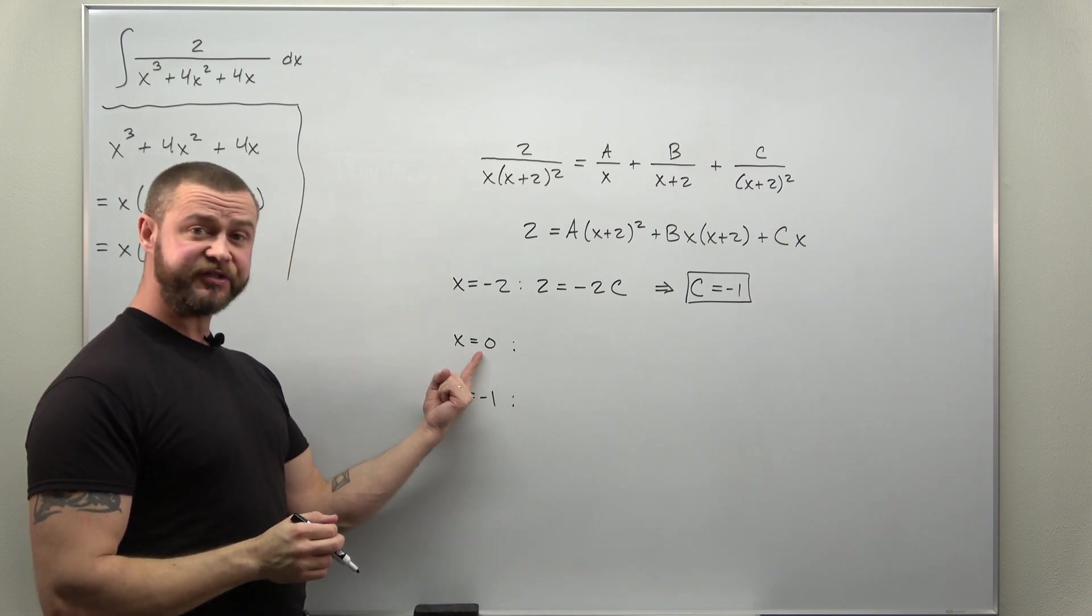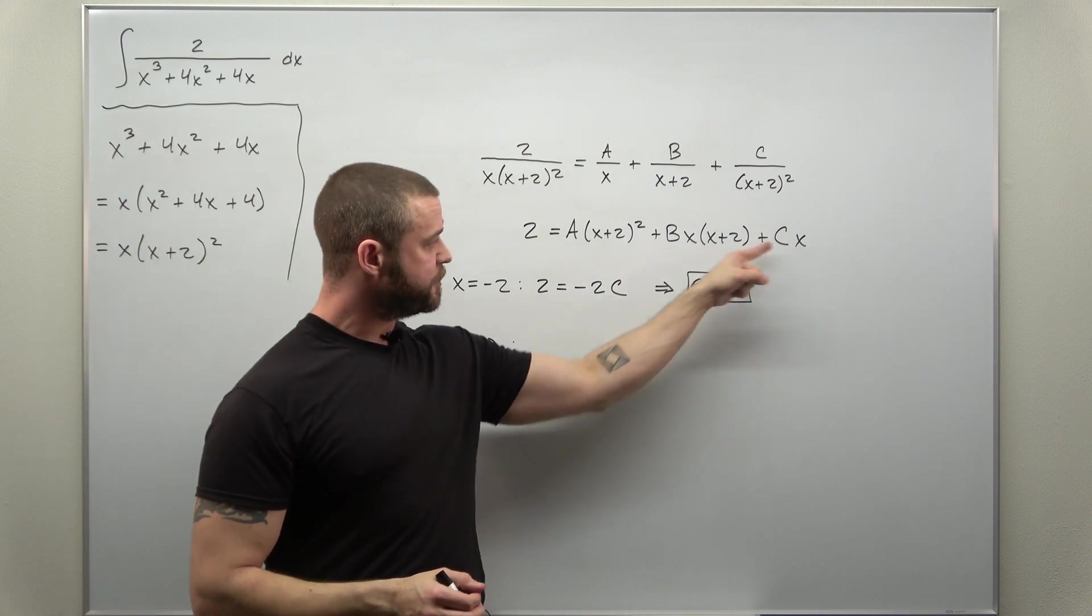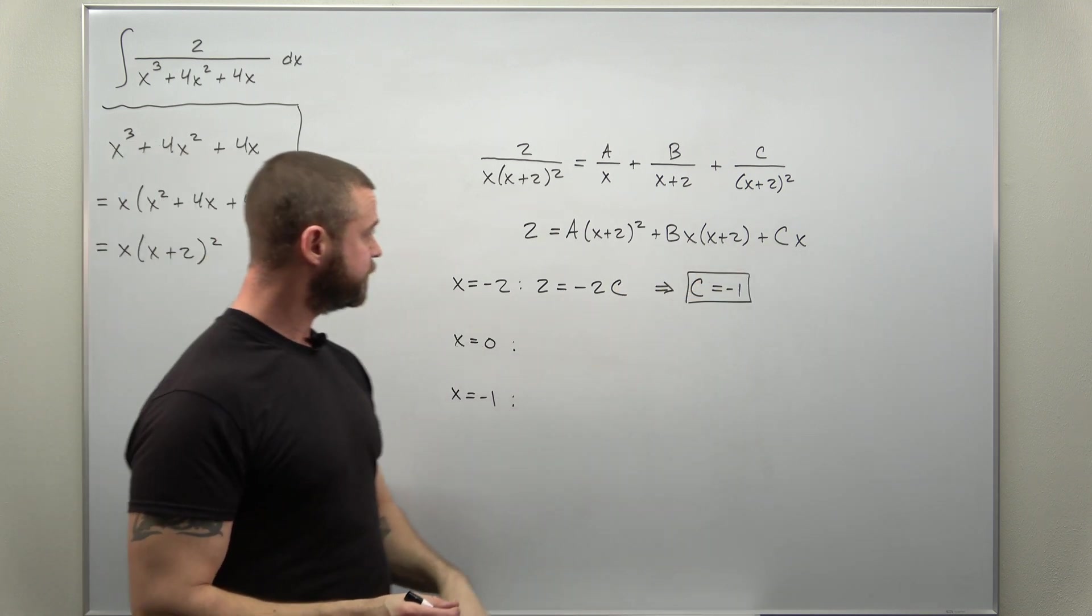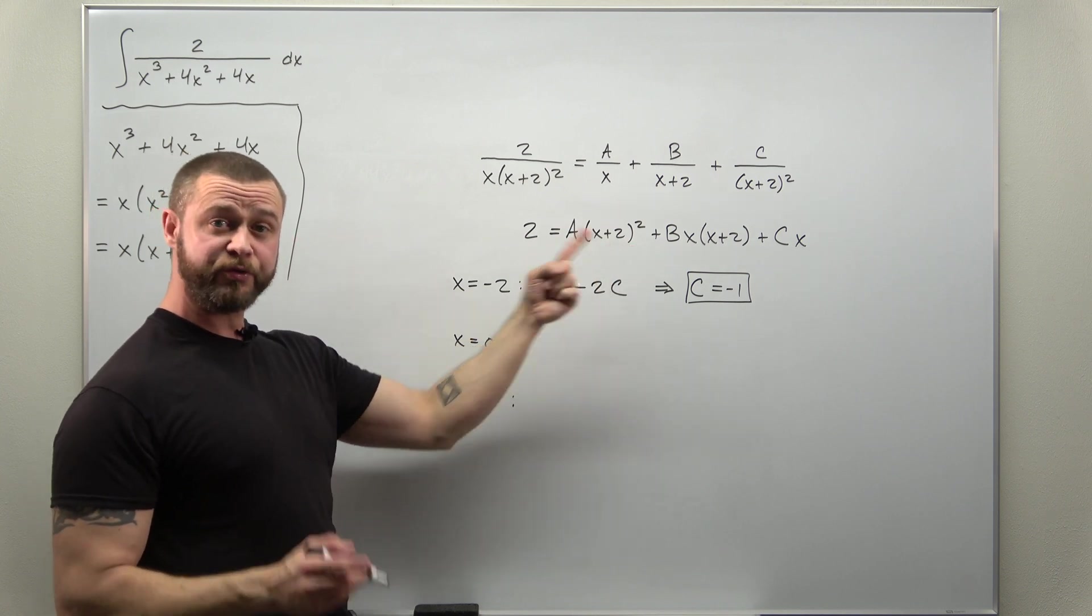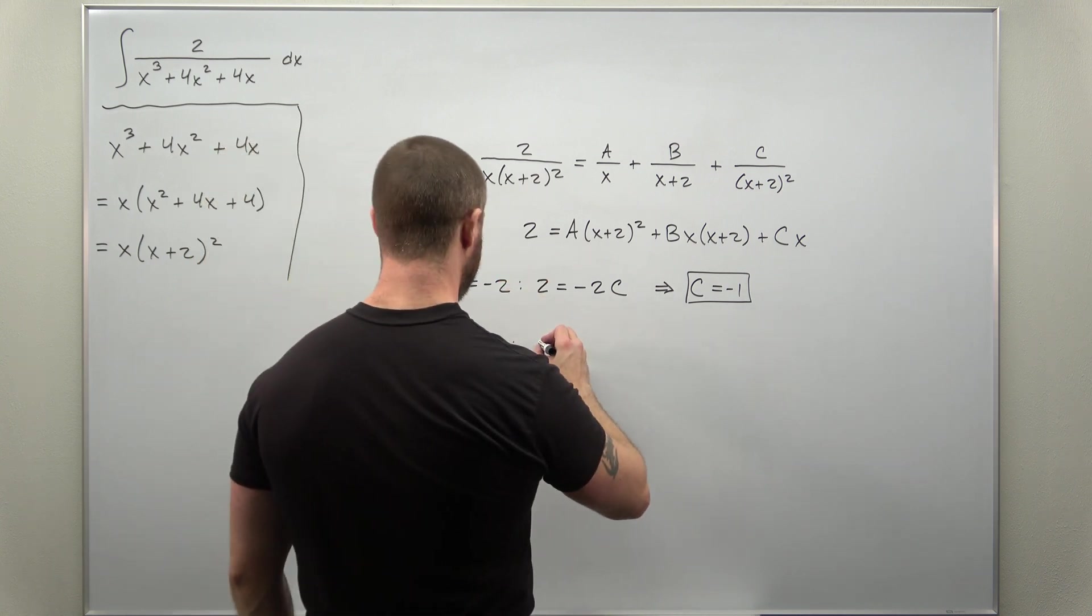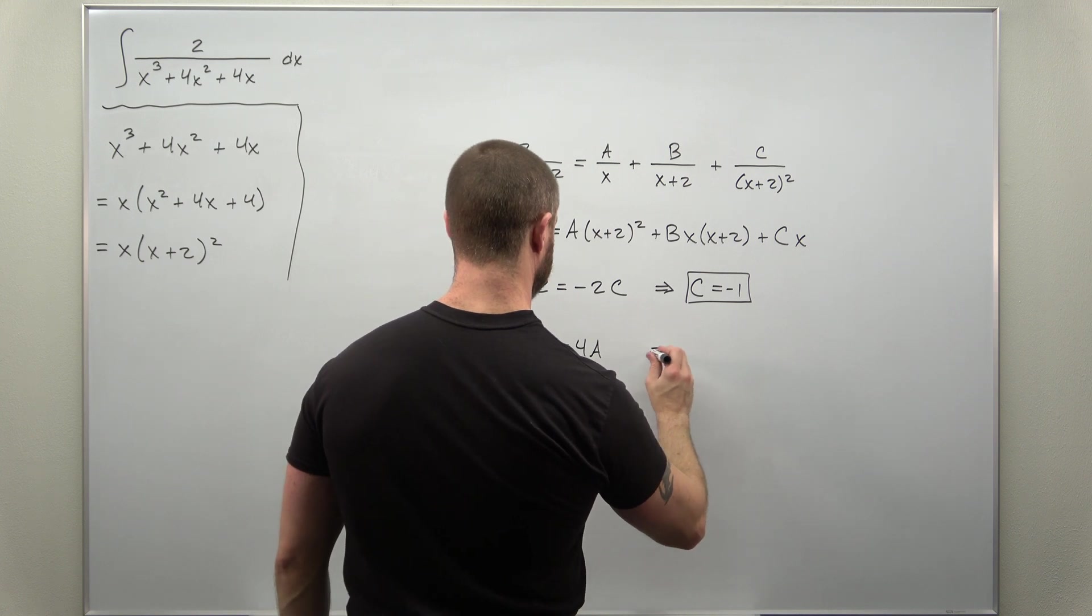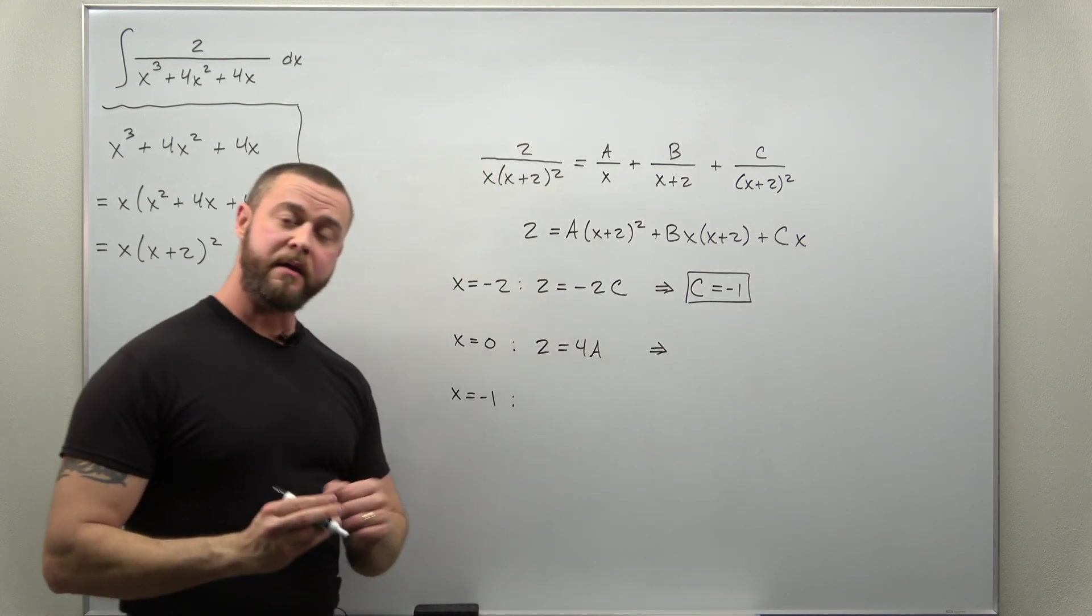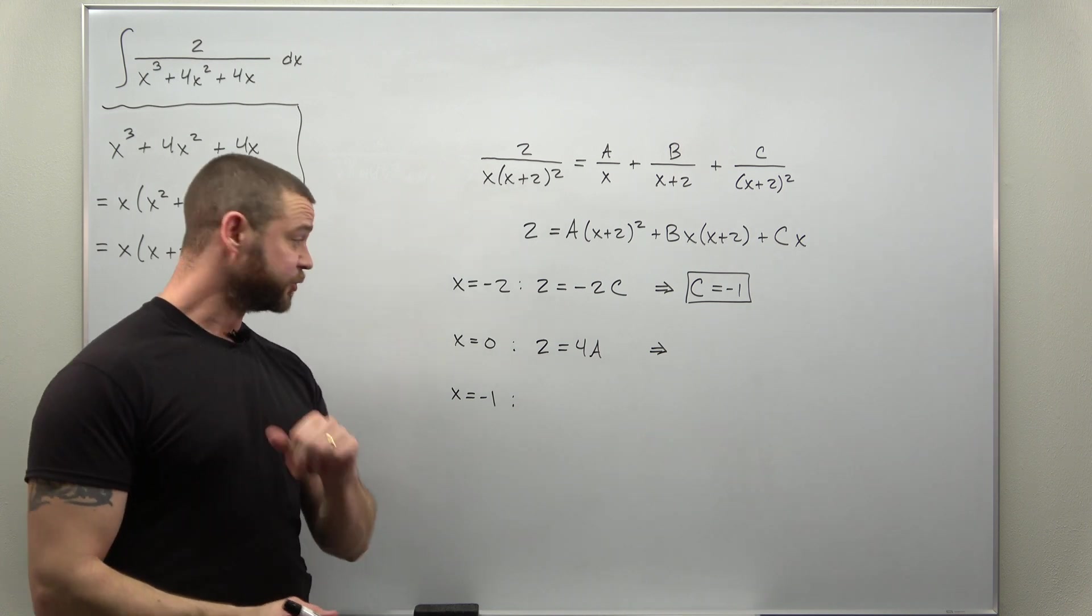Alright, let's go ahead and plug in x is 0. Anything with the factor of x, your b and c terms cancel. Your a term remains, but notice you have 0 plus 2 squared. So 2 squared, which is 4. Our equation is going to be 2 equals 4a. And that we can solve very easily. We can get a as 1 half.